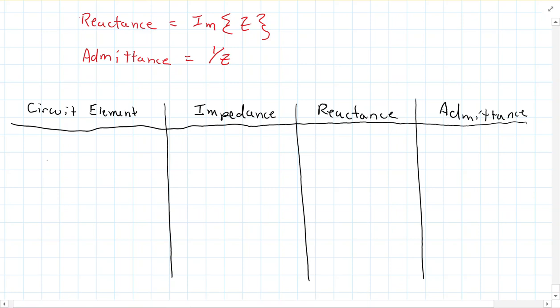So, we'll say circuit element, impedance, reactance, and admittance. Okay, so for the resistor, the impedance is straightforward. It's just R. And since the reactance is the imaginary portion of the impedance, there is no imaginary portion to resistor. Resistors are all real valued. There is no reactance. So, I'll just leave that as a blank there. And then the admittance is 1 over R.